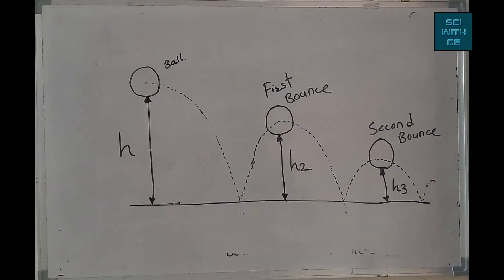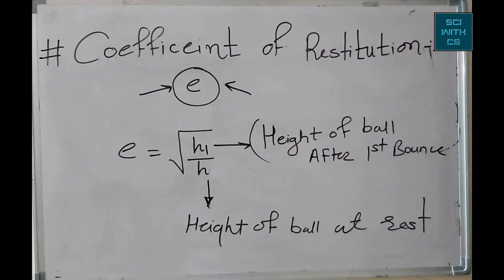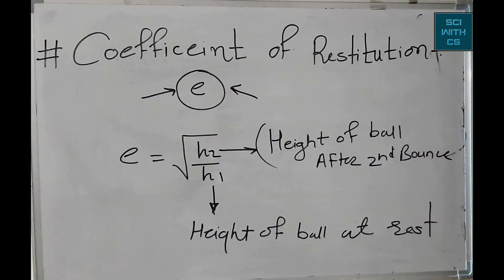Here, h is the height at rest or the height of the ball before the bounce, and h2 and h3 are the respective heights after the bounce. The simple formula for the coefficient of restitution, represented by e, is the square root of the height of the ball after the first bounce divided by the height before the bounce. This gives you the value of e, and similarly for succeeding heights.